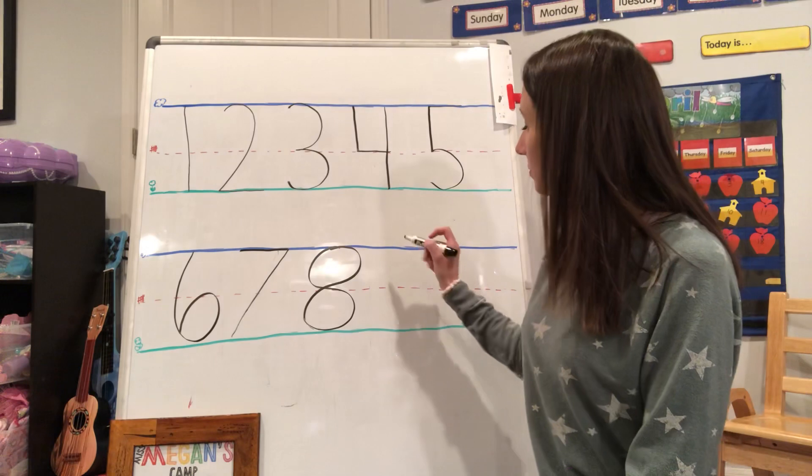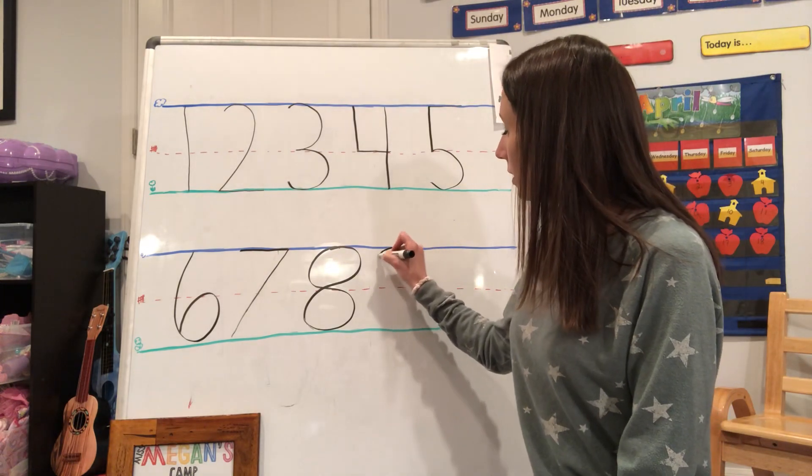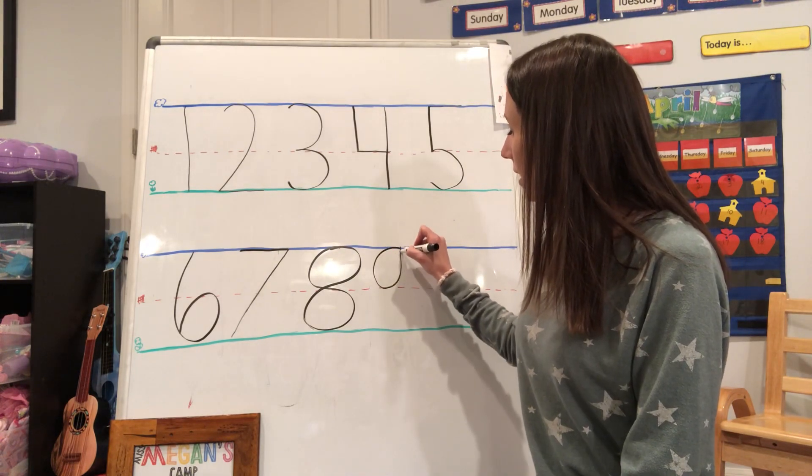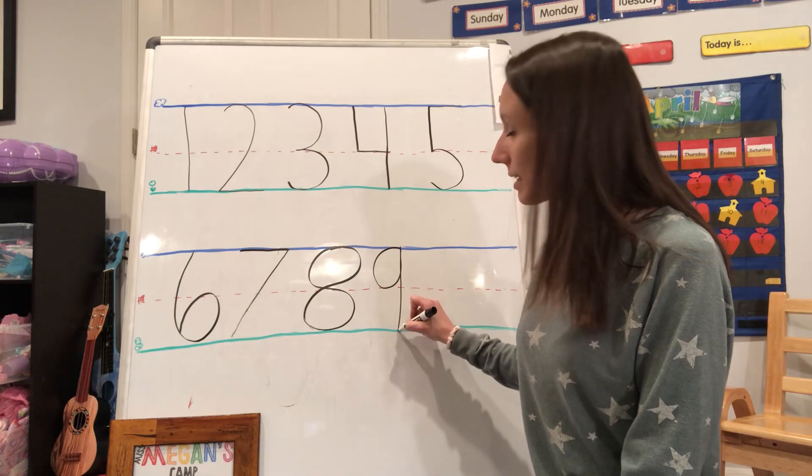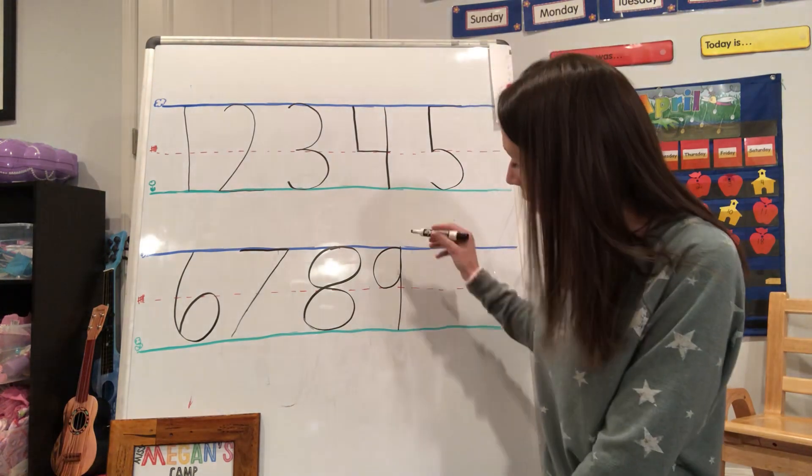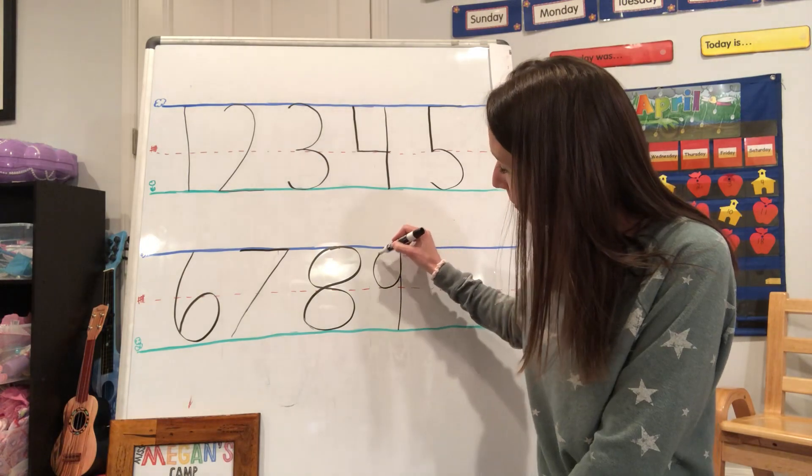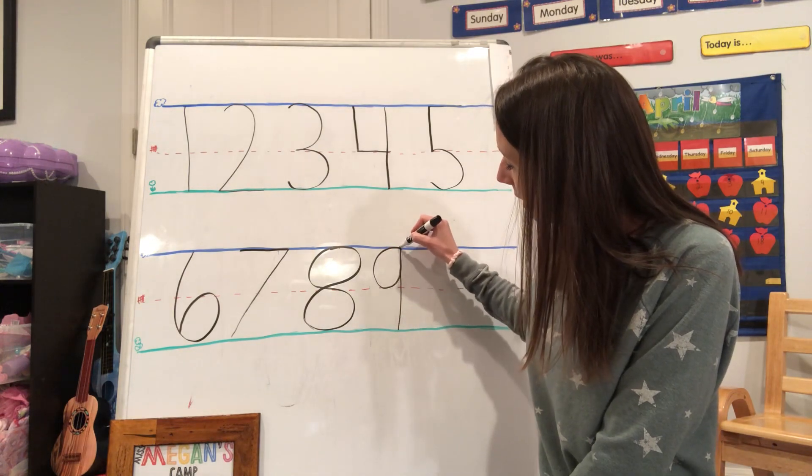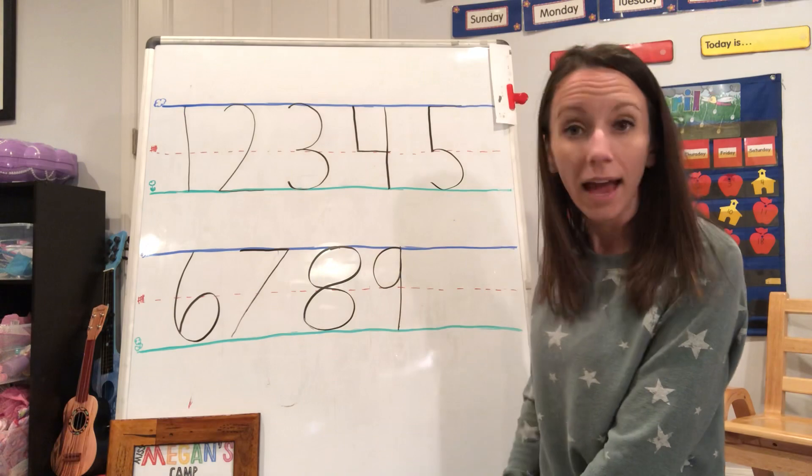Number nine. A loop and a line, that makes a nine. Did you see that I did not lift up my marker during that time? Number nine. We say, a loop and a line, that makes a nine.